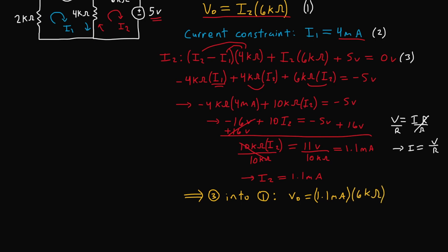Once again, current times resistance, we get units of volts, which ends up being 6.6 volts. So V₀ equals 6.6 volts.